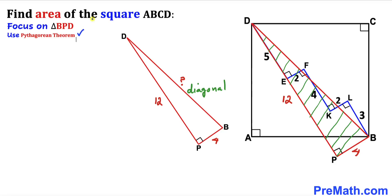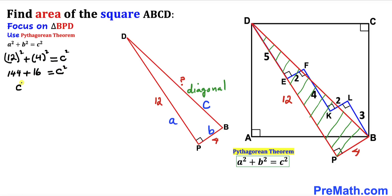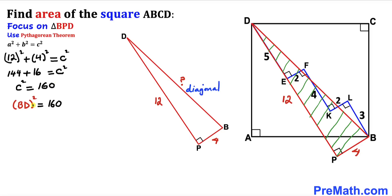Since we are dealing with a right triangle, we use the Pythagorean theorem: A² + B² = C². In our case A is 12 and B is 4, so we get 12² + 4² = C², which simplifies to 144 + 16 = C², giving us C² = 160. Therefore BD² = 160, where BD is the diagonal of square ABCD. We'll call this equation number one.